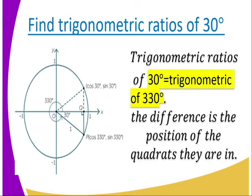In the fourth quadrant, only cosine is positive. The trigonometric ratios are similar to those of 30 degrees, but the difference is that cos(negative 30°) equals cos(30°) — they are the same. However, for tan(30°) versus tan(negative 30°), tan(negative 30°) is supposed to be the negative of tan(30°). That is how we treat negative angles.